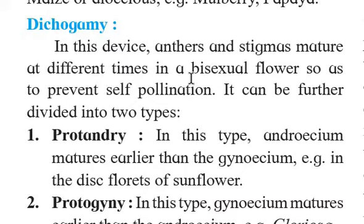After some days, the gynoecium — meaning stigma, style, and ovary — will be developed. As the pollen grains of the same flower have already been released, those pollen grains are no longer available for deposition on the stigma of the same flower. So whichever pollen grains are deposited will be from a different flower of a different plant of the same species, which will favor cross-pollination.